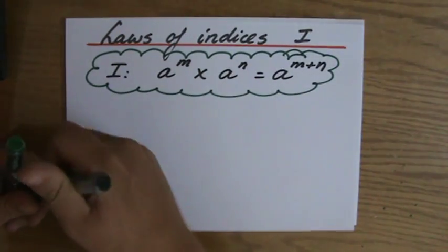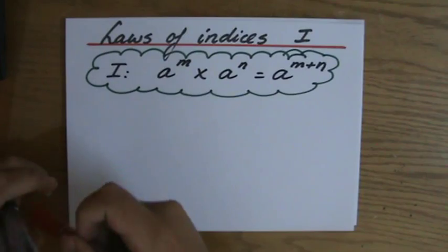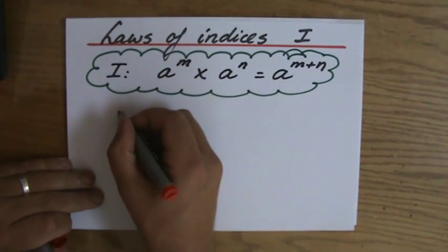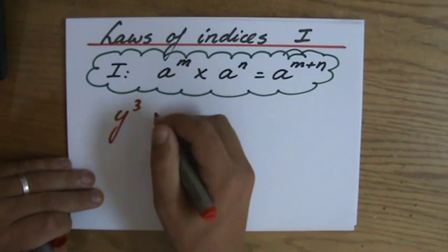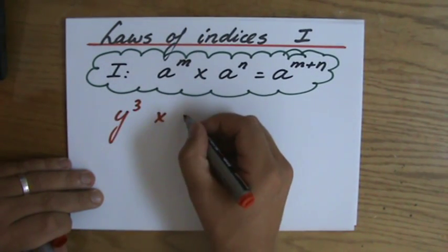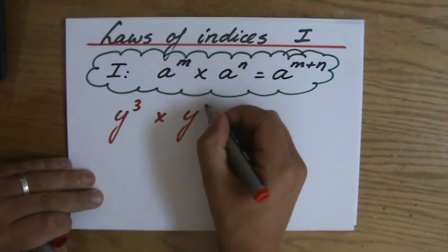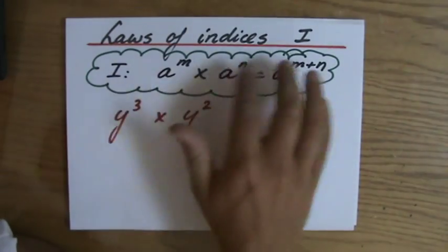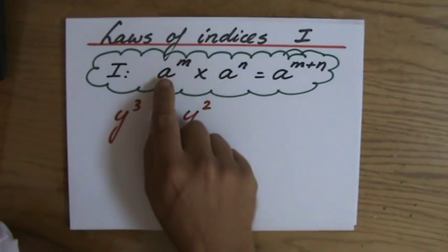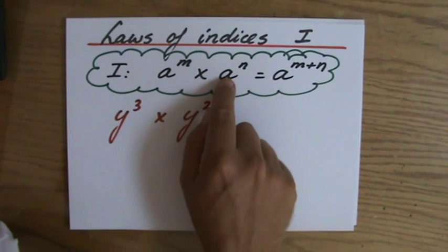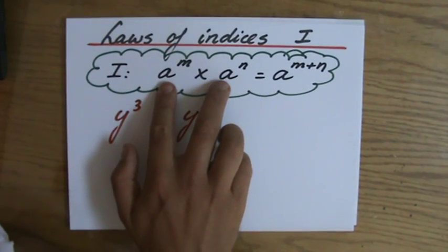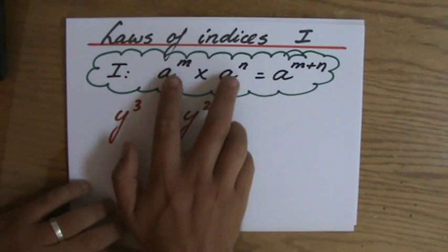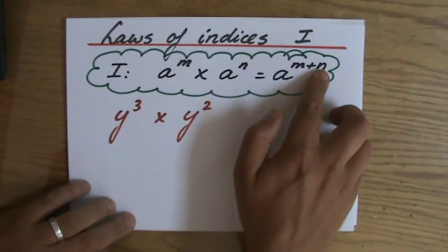I'm going to do that in red. If I have, for instance, y to the power 3 times y to the power 2 — it's important with this first law of the indices that the bases are the same. If they're both the same, then you add the indices, m plus n, as the answer.